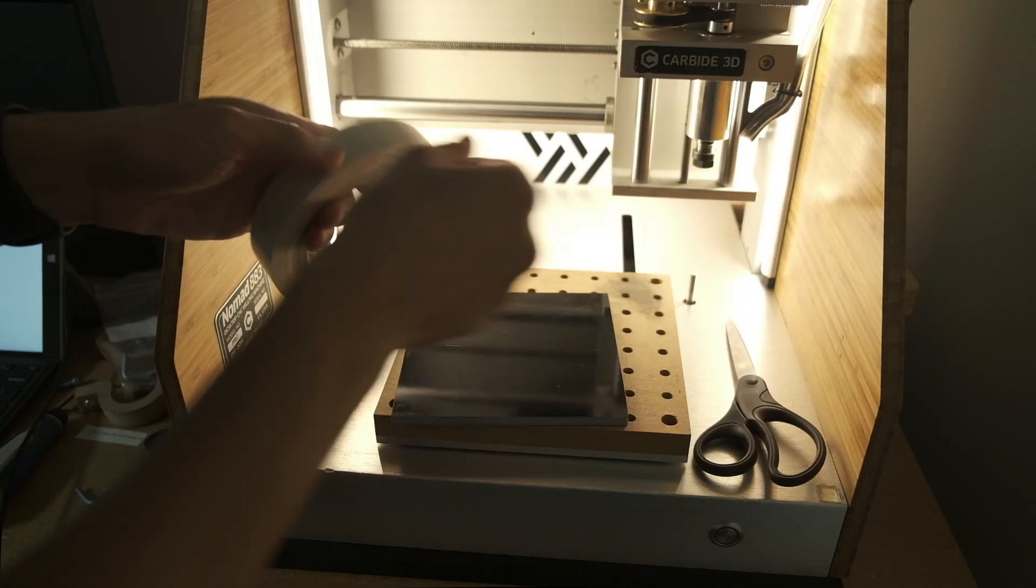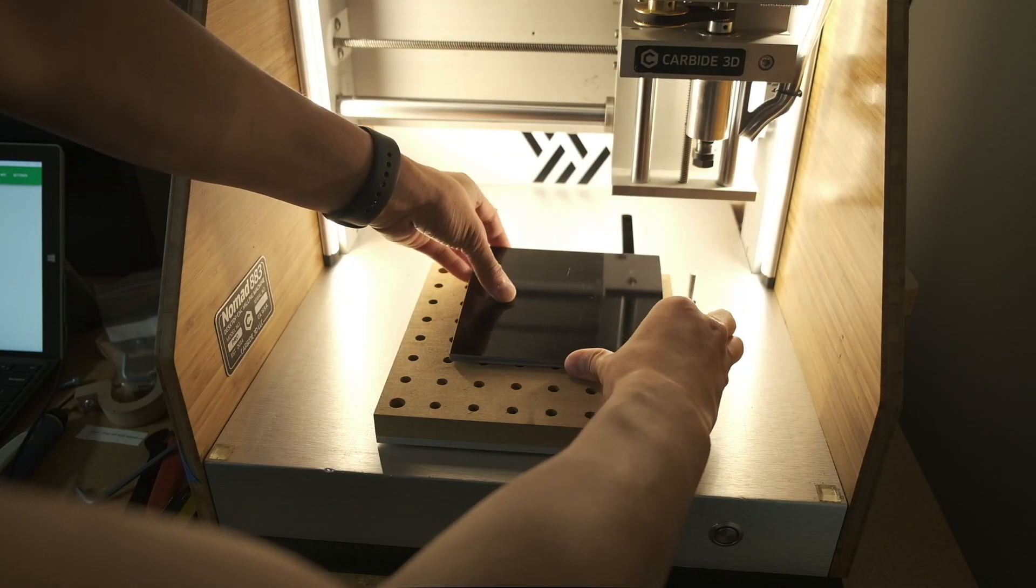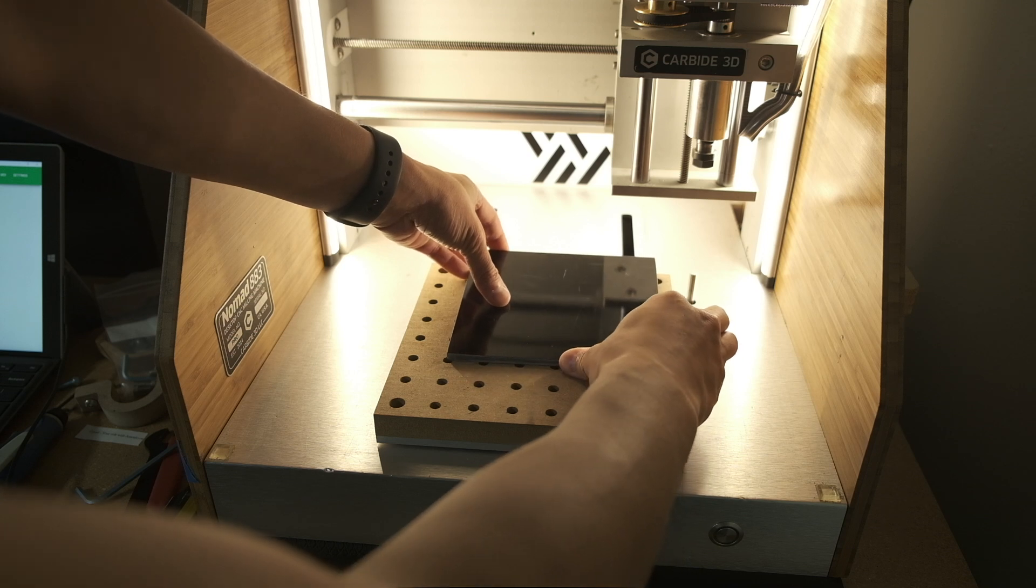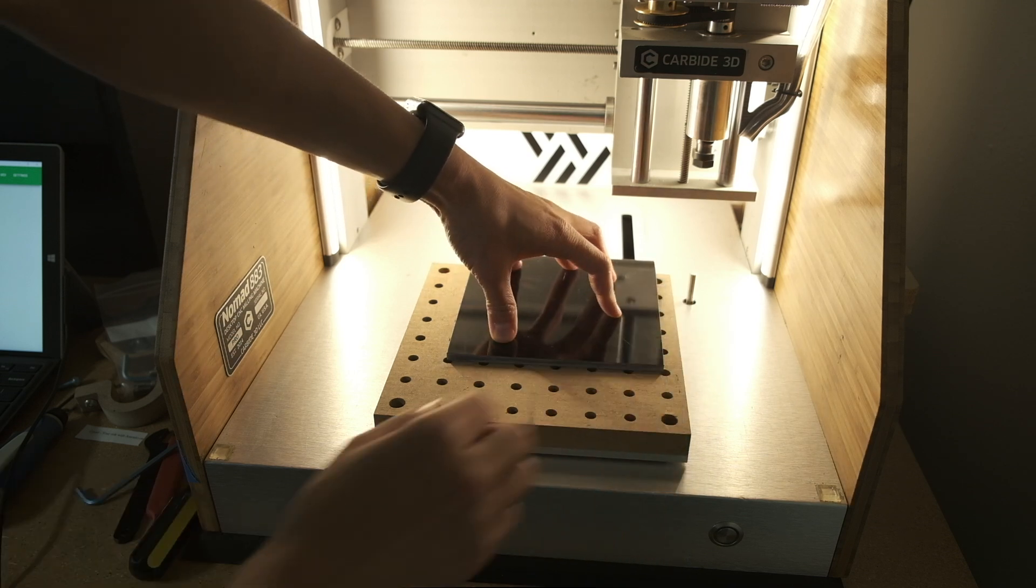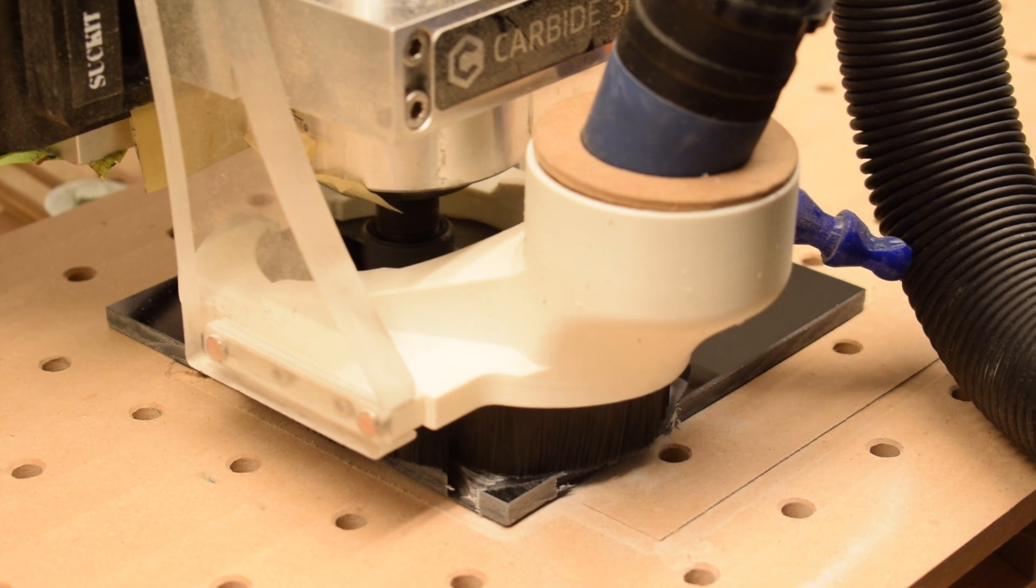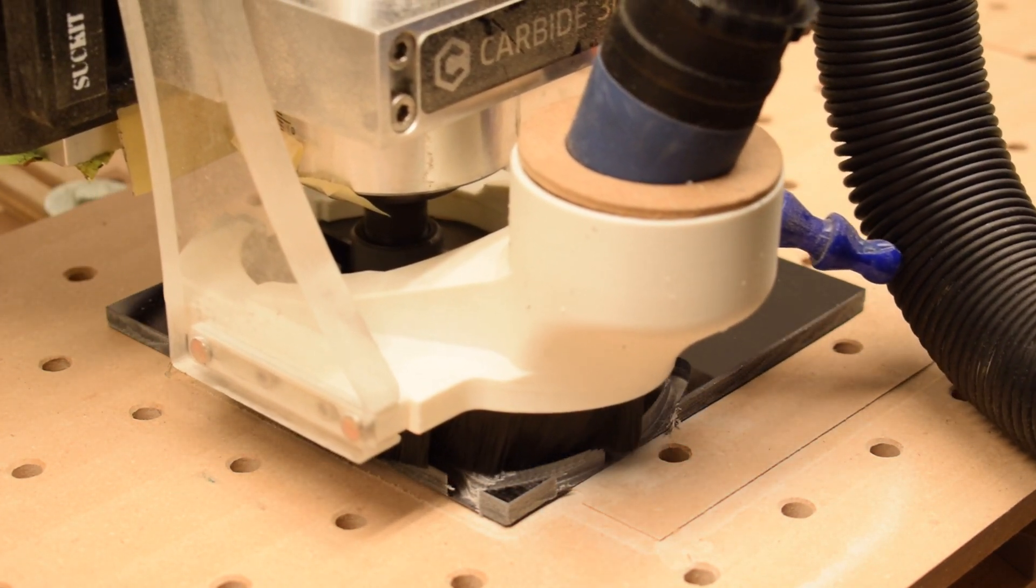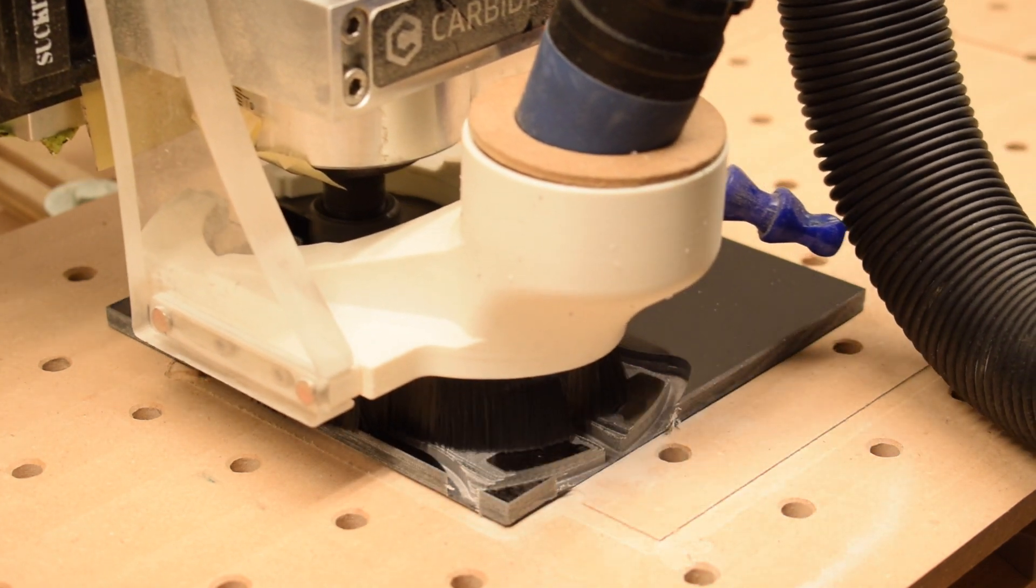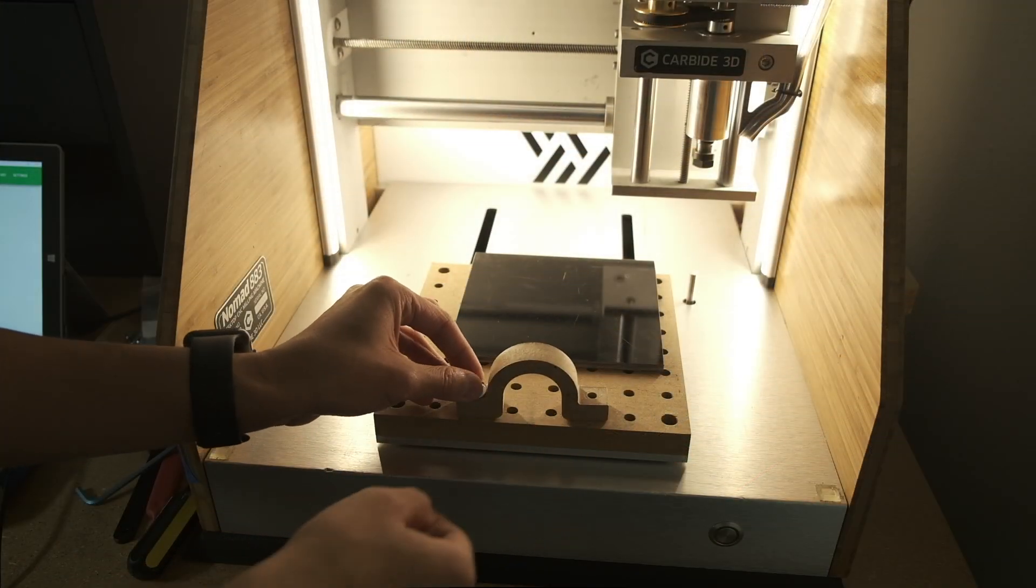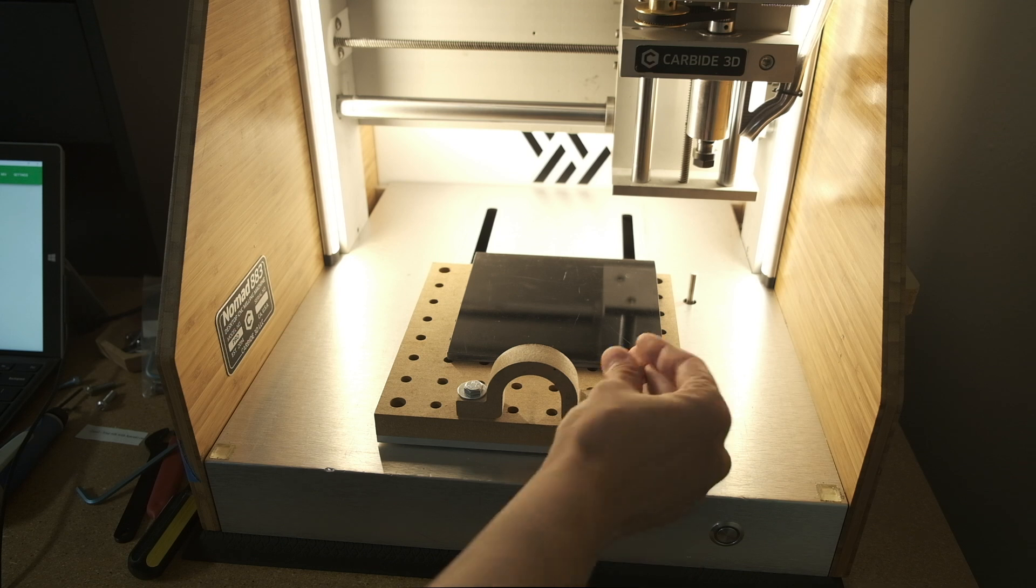The first rule of working with G10 is don't breathe the dust. It's basically fiberglass, so you don't want to get it in your lungs and you want to try to avoid getting it on your skin. The best thing to do would be to machine it with a dust boot like we can do on the Shapeoko. But I want these scales to fit as precisely as possible on the knife.